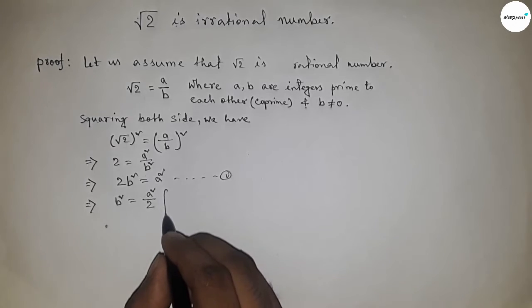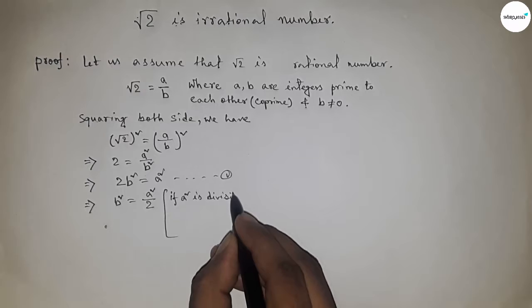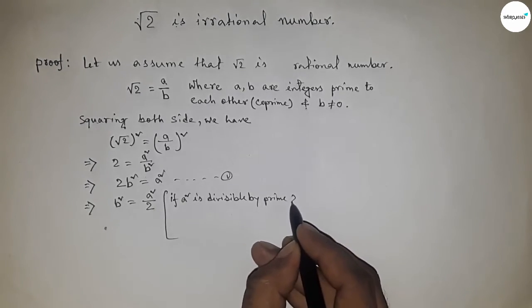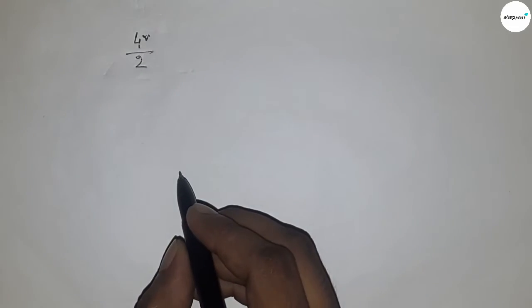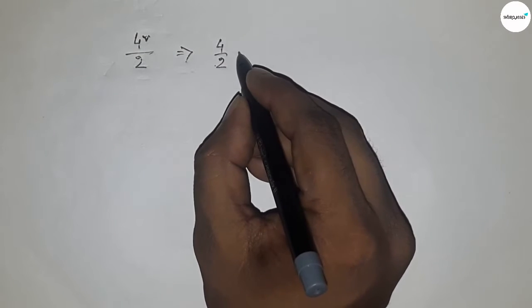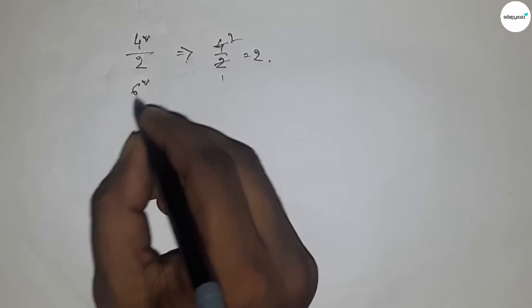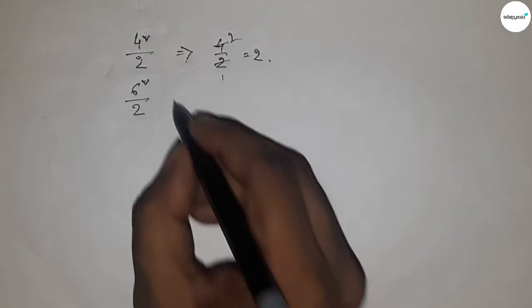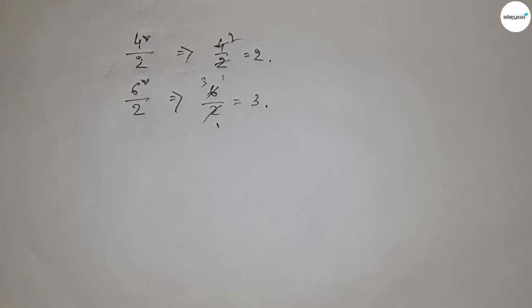From equation one, b squared equals a squared by 2. We apply the theorem: if a squared is divisible by a prime number — here, 2 — then a is also divisible by 2. For example, 4 squared divisible by 2 means 4 is divisible by 2; similarly, 6 squared divisible by 2 means 6 is also divisible by 2.